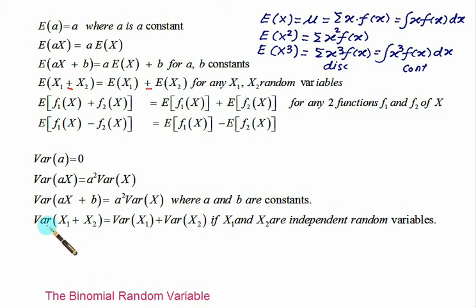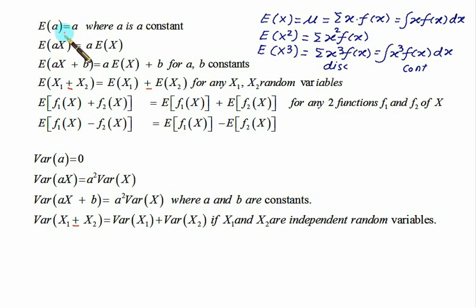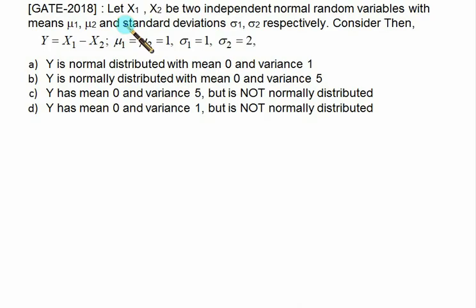The variance of x1 plus or minus x2, whether it is addition or subtraction, gives the same result: Var(x1) + Var(x2), where x1 and x2 are independent random variables. To summarize: E(a) equals a, and Var(a) equals zero. Try to remember these rules, as questions will be based on them.